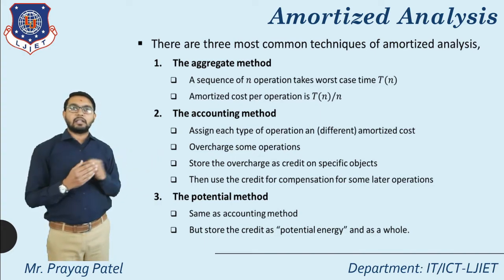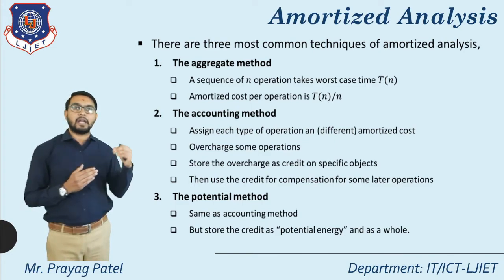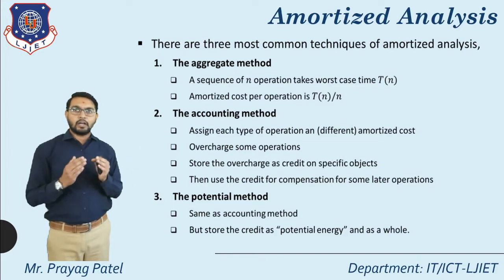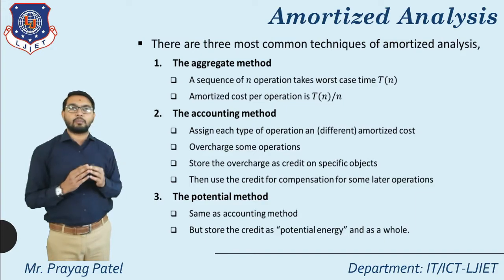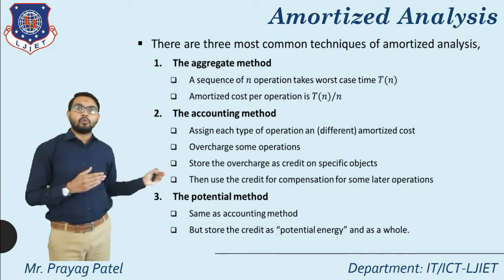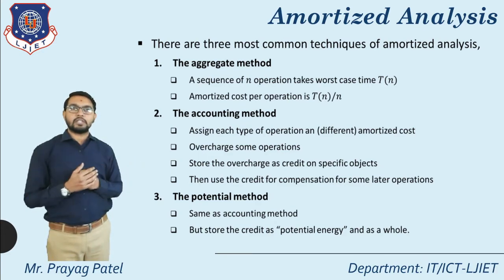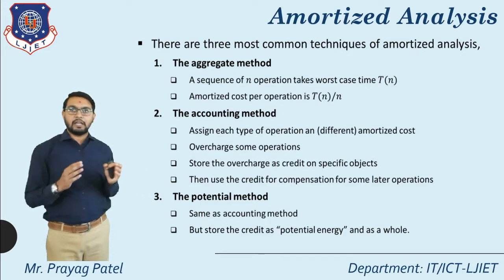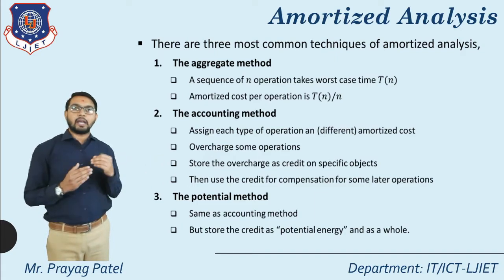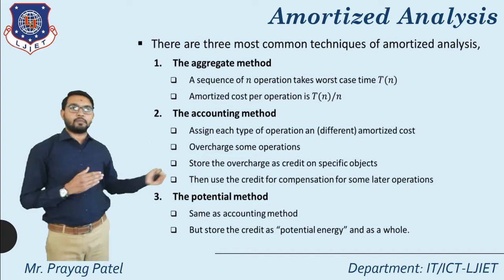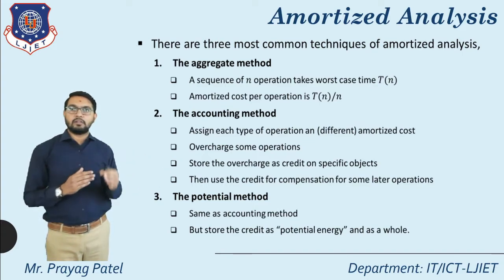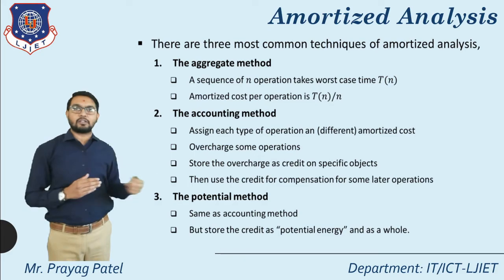The second method is the accounting method. In the accounting method, we assign each type of operation a different amortized cost. We consider the amortized cost for each and every operation, and each operation's cost is different. Then we overcharge some operations and store the overcharge as credit on a specific object.